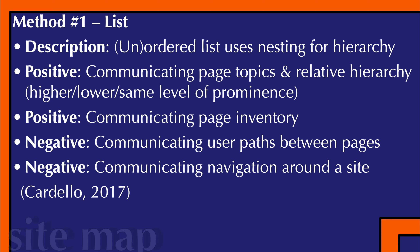The first method is lists. What is a list? It uses either an ordered or unordered list that uses nesting for hierarchy. You would have major parts of the site, and then you would tab in or indent parts that are below it to show the hierarchy. The item furthest left that's not indented is the highest level of hierarchy. Something indented once is the next level, and another indent is a lower level.